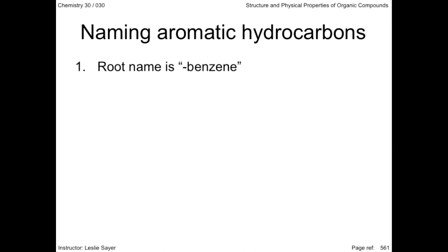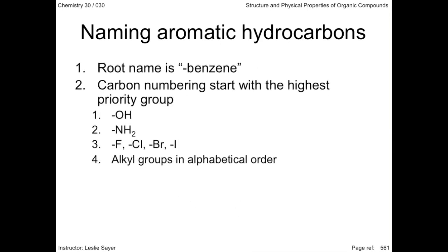The root name is simply benzene. This is going to require some memorization, but carbon numbering starts with the highest priority group. If there is an OH or hydroxyl and an NH2 or amine group off the benzene ring, then carbon number one is at the hydroxyl group, and the other carbons are numbered so that the amine group has the lowest possible number. Numbering continues in the direction of the nearest group.